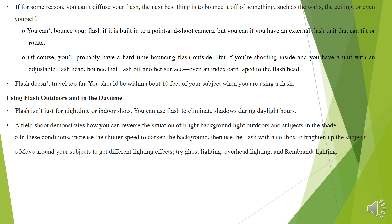If for some reason you can't diffuse your flash, the next best thing is to bounce it off something such as walls, the ceiling, or even yourself. You can't bounce your flash if it is built into a point-and-shoot camera, but you can if you have an external flash unit that can tilt or rotate. Of course, you will probably have a hard time bouncing flash outside. But if you are shooting inside and you have a unit with an adjustable flash head, bounce that flash off another surface — even an index card taped to the flash head. Flash doesn't travel too far; you should be within about 10 feet of your subject when you are using a flash.